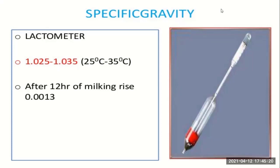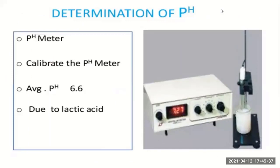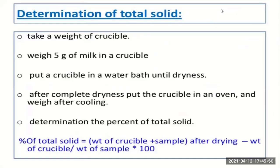Another method uses specific gravity, for which we use an instrument called a lactometer. After 12 seconds of milk rising, the reading is 0.001 to 0.0013. Determination of pH: we use a pH meter; calibrate the pH meter — the average pH is 6.6 due to the presence of lactic acid. Determination of total solids: weigh a crucible, weigh 5 grams of milk in the crucible, put the crucible in a water bath until dryness, then put it in an oven, and after cooling determine the percent of total solids.